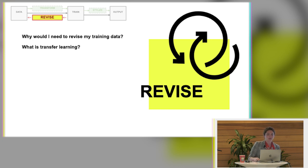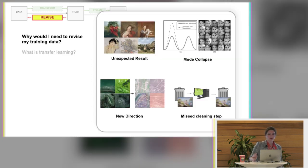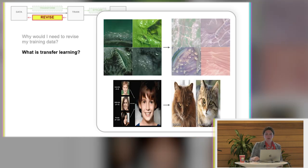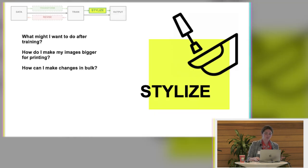You may need to revise training data. So you might have unexpected results. Mode collapse, as I mentioned before. Or you might want to just move in a new direction. Or you may have missed a cleaning step. Transfer learning is a great way to take a model that already exists. And kind of move to, in a different direction. Without wasting a whole bunch of time and compute resources to do so.